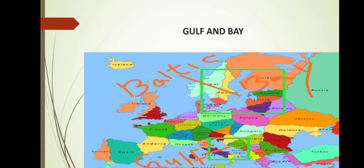Bays and gulfs are parts of the sea enclosed by land on three sides. The mouth of the bay is usually wide, whereas a gulf is a narrow inlet in the sea. Can you see the Baltic Sea on the map? It is a bay. And down you can see a gulf beside Italy. The entire Baltic Sea is a large gulf.